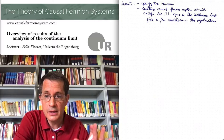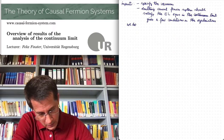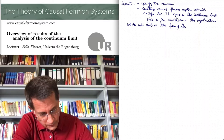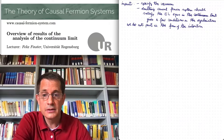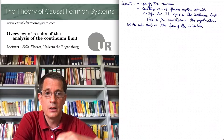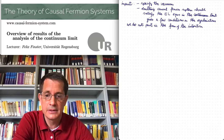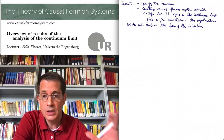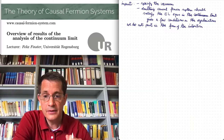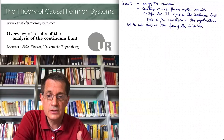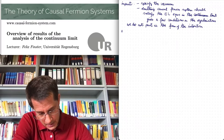What do we not put in? We do not put in the form of the interaction. Instead, the procedure is as follows: we have a critical point of the causal action principle, namely the vacuum causal fermion system, and then we perturb it with finite perturbations as general as possible. Then we ask whether the Euler-Lagrange equations are still satisfied, and this should give us the structure of the interactions and the detailed forms of the field equations.